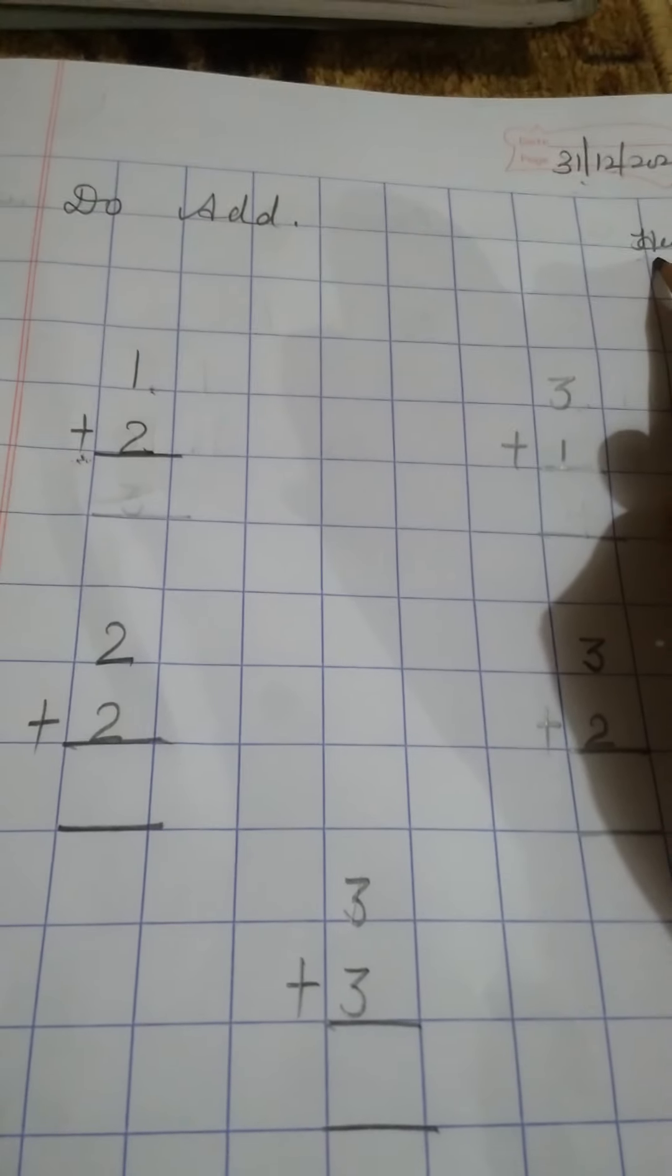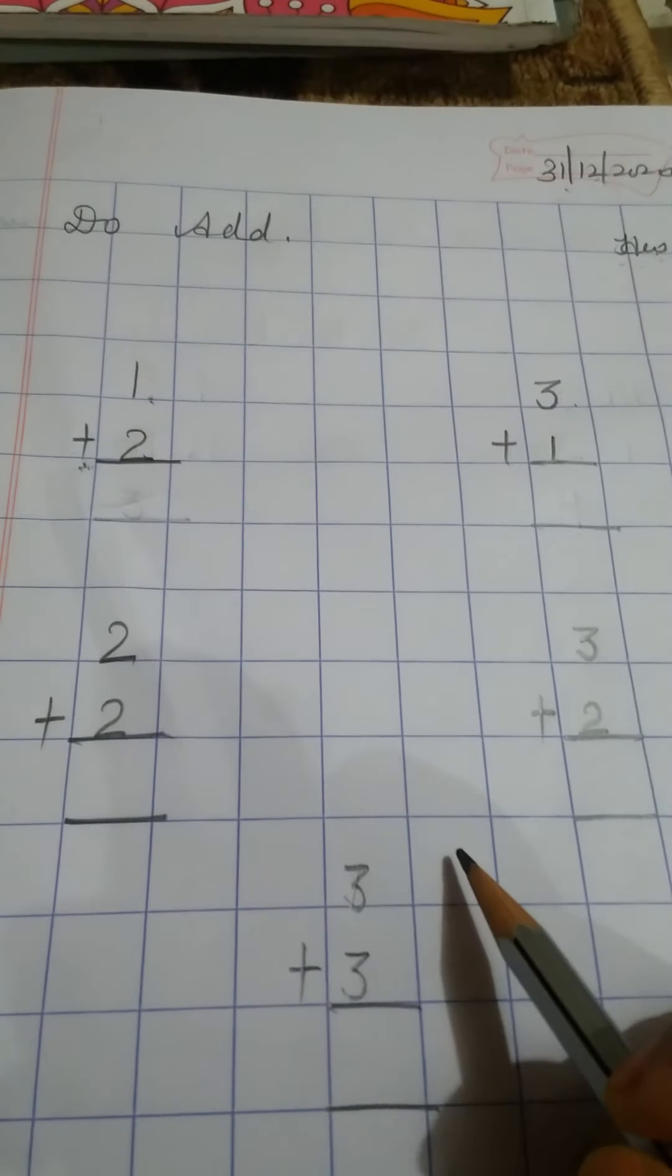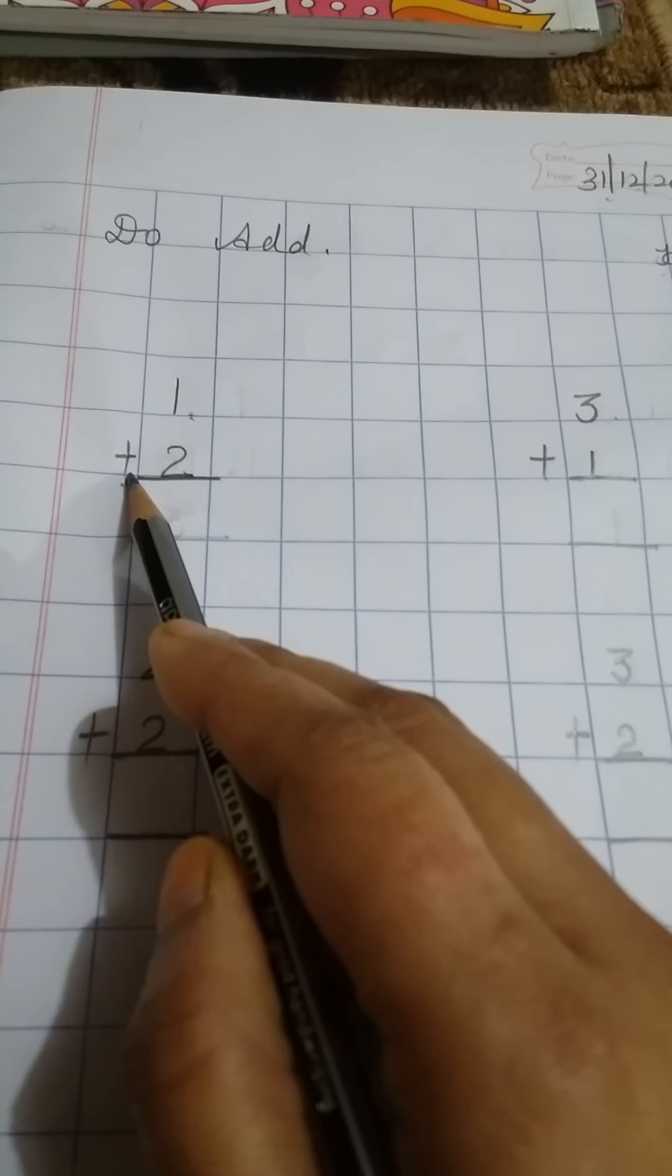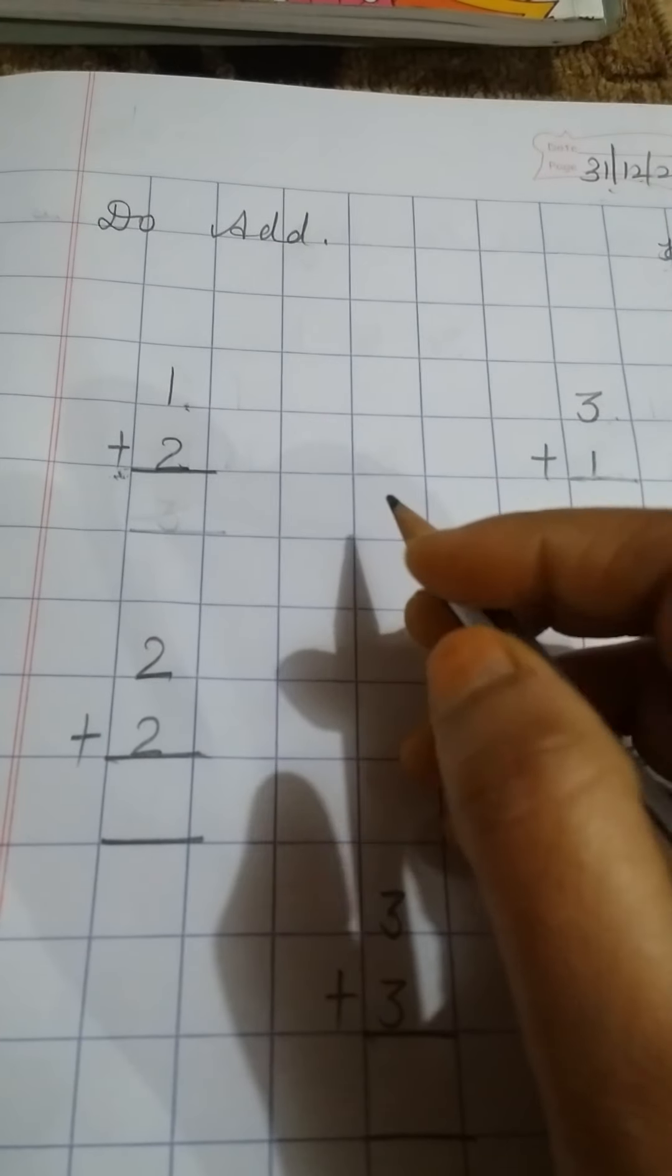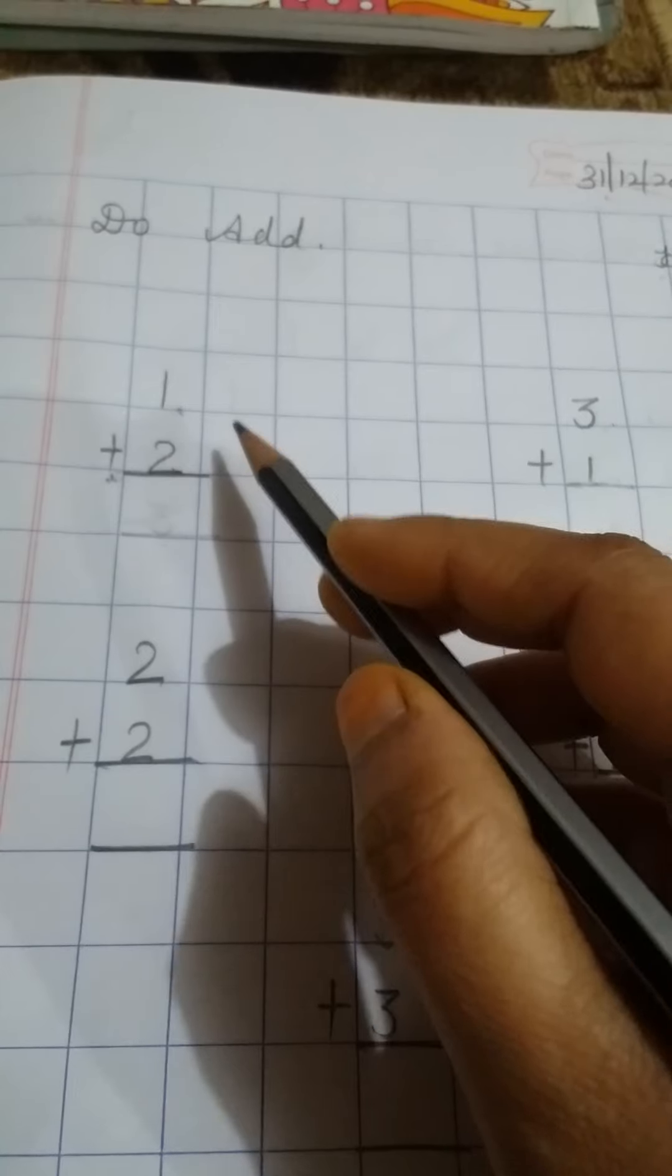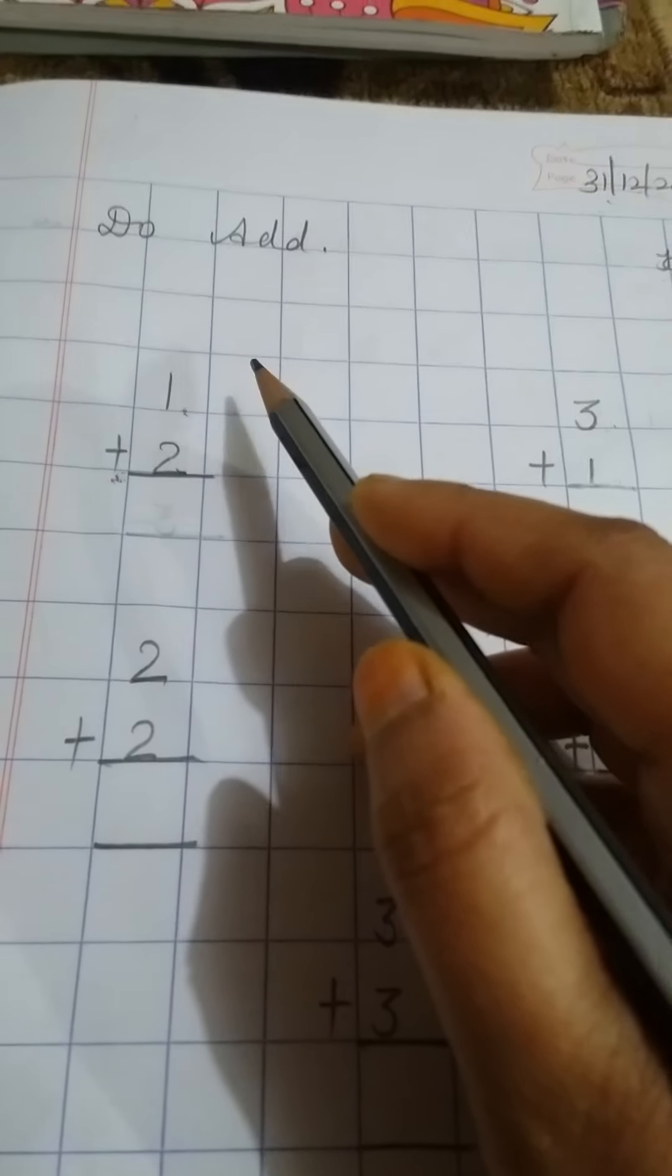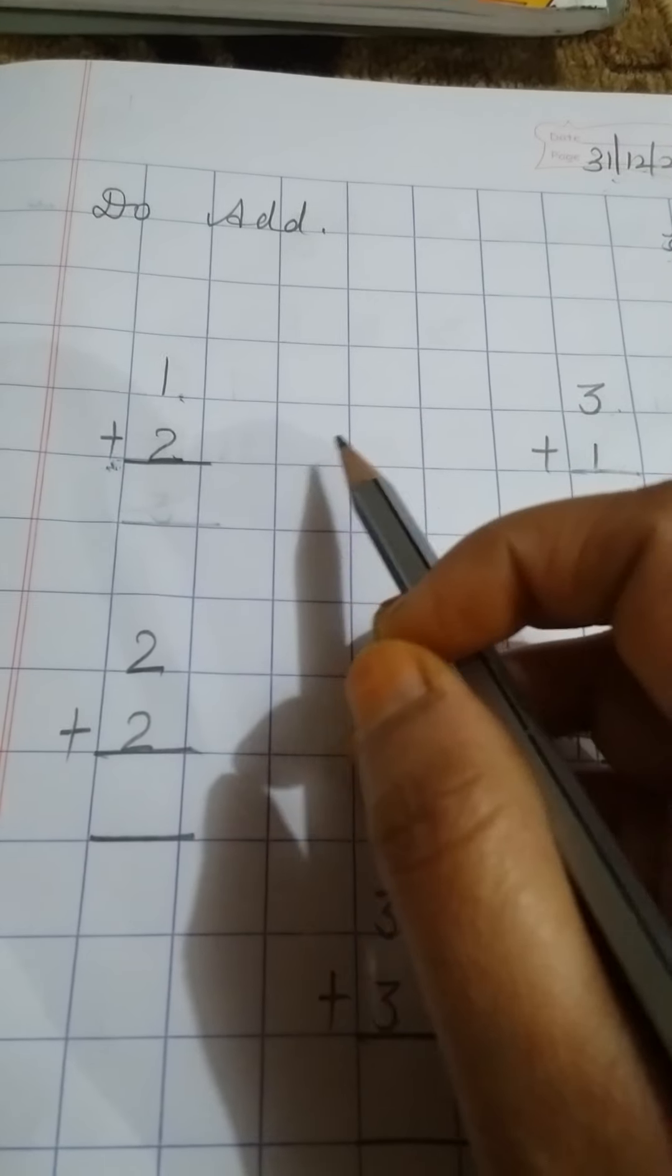Students, today we are going to revise addition. This is the sign of add. You have to identify the number, then you have to draw lines in front of the number, right.